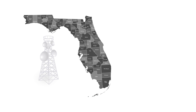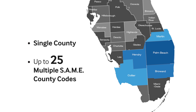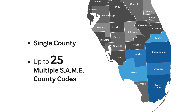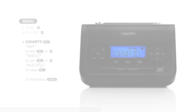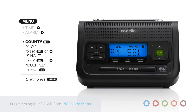If you prefer, you can set the radio to receive alerts for a single county or multiple counties by using the county menu option. Simply press menu and the up arrow to scroll to county, then press select and use the up arrow to make a choice between single, multiple, or keep any for your SAME county code selection. Press select for your option.